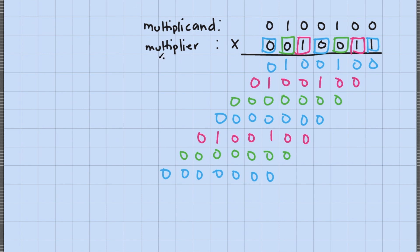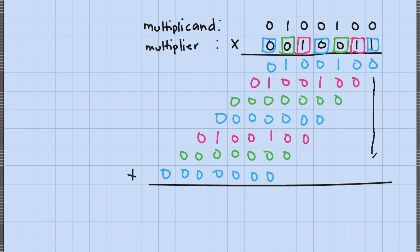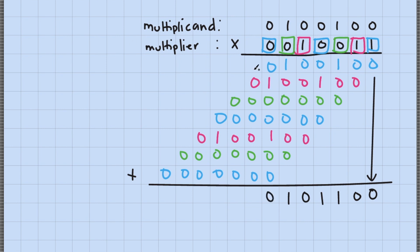Adding all the partial products column by column: 0, 0, 1, 1, 0, 1, 0 carry 1, 1, 1, 0, 1, 0, 0, 0. These bits represent the magnitude bits of the result.